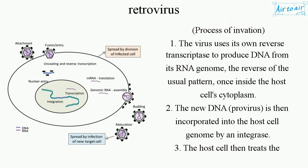Process of Invasion. Step 1: The virus uses its own reverse transcriptase to produce DNA from its RNA genome — the reverse of the usual pattern — once inside the host cell's cytoplasm.